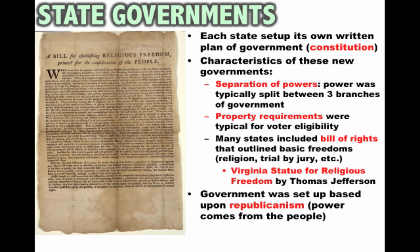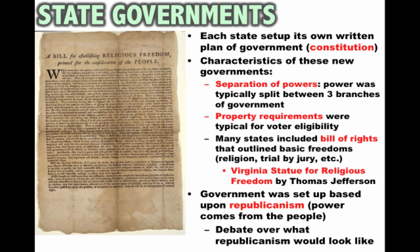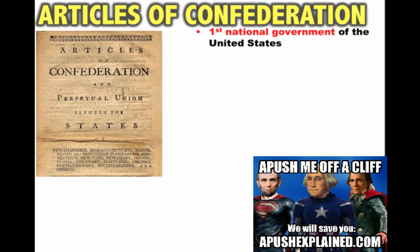All these different state governments, no matter what their different rules were, were set up based upon the idea of republicanism — this meant power comes from the people and is based upon consent. However, there would be debates over what republicanism would look like in the new nation. Some states maintained property qualifications for voting while others abolished them during the American Revolution.